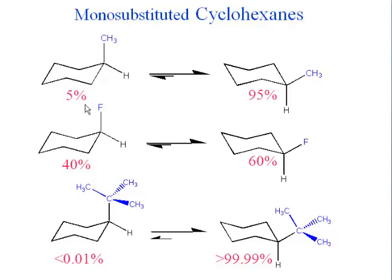For the fluorocyclohexane the preference for equatorial is not as great. It's a 60-40 split but the equatorial position is still favored. Fluorine is a smaller substituent than methyl. That's why it doesn't make as much difference.